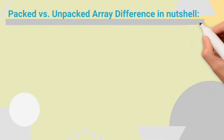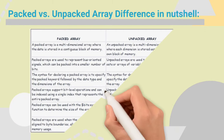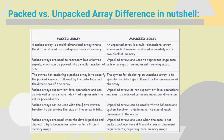Let us see packed versus unpacked array differences in a nutshell. For packed arrays, data is stored in a contiguous block of memory, while for unpacked arrays, data is stored separately in its own block of memory. Packed arrays are used to represent bus-oriented signals which can be packed into a smaller number of bits, while unpacked arrays can represent large data sets or arrays of variables with varying sizes.